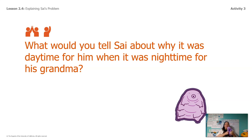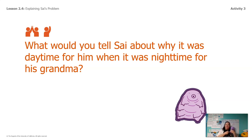For this next part you're going to need a buddy, just like I have my buddy Lavender here. You could have a real person to talk to — you don't need a stuffy. What I want you to do is talk to your partner about what you would tell Psy about why it was daytime for him when it was nighttime for his grandma. Pretend your partner is Psy and tell him what's going on.